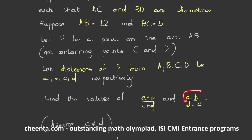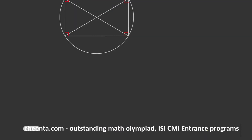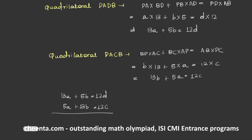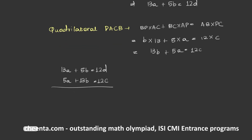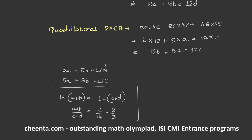The problem asked us to find the ratio of (a plus b) to (c plus d), and also the ratio of (a minus b) to (d minus c). Adding the two equations gives 18 times (a plus b) equals 12 times (c plus d), which gives (a plus b) divided by (c plus d) equals 12 by 18, which is 2 by 3. Subtracting the two equations gives 8 times (a minus b) equals 12 times (d minus c), which gives (a minus b) divided by (d minus c) equals 12 by 8, which is 3 by 2. Hence we are done.